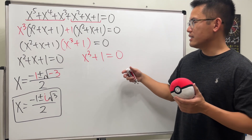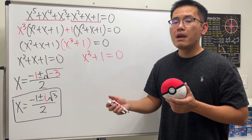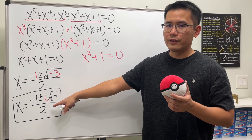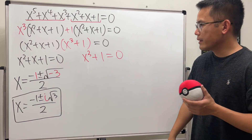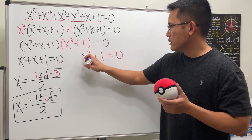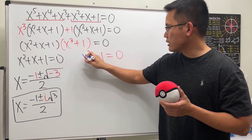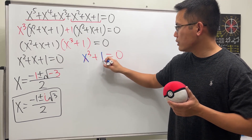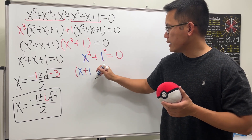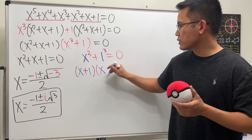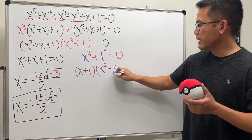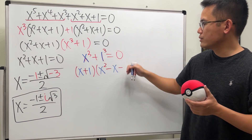Let's find all solutions. We treat this as x cubed plus one cubed and factor it as a sum of two cubes. So we write x plus one, times x squared, minus x times one, plus one squared.